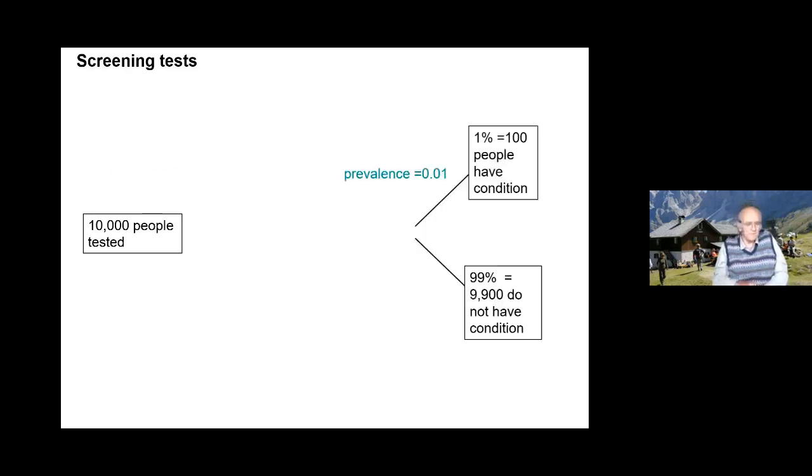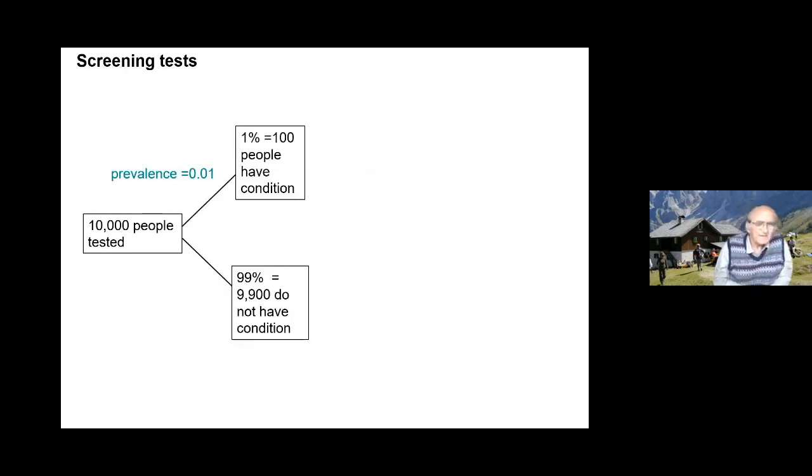This is now quite commonplace, but I'll just go through it quickly. Suppose you test 10,000 people, and that 1 in 100 of those people have the condition, say COVID, and 99% don't. So the prevalence in the population you're testing is 1 in 100, so you have 100 people with the condition and 9,900 who don't.